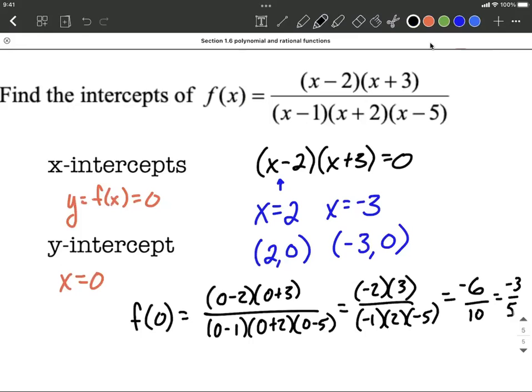As an ordered pair, that's 0 for our x-value, -3/5 for our y-value. Hope this helps. Good luck.